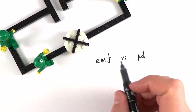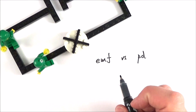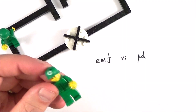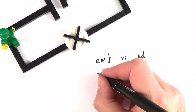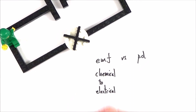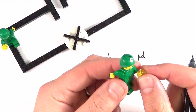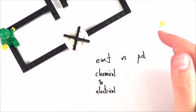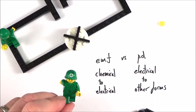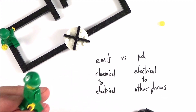To summarise: what's the difference between EMF and potential difference? Although they're both measured in volts, EMF is the energy per unit charge transferred from chemical to electrical energy. The potential difference, on the other hand, is the energy transferred per unit charge from electrical energy into other forms. Just think about it in terms of energy per unit charge and how the energy is transferred from one form to another.